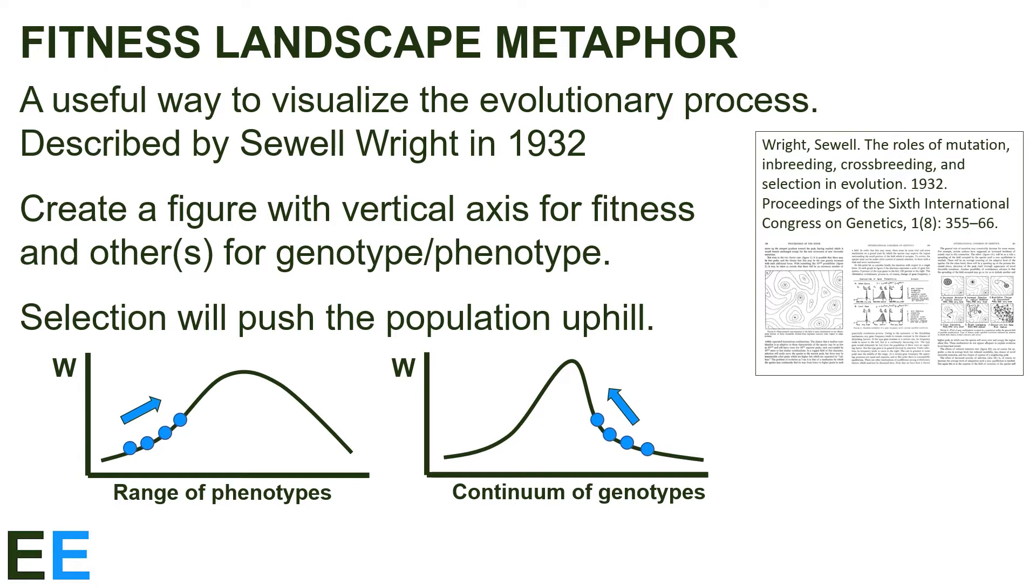The diagrams here show simple two-dimensional landscapes, one using a range of values for a phenotype as the horizontal axis, and another using a continuum of genotypes. The vertical axis is fitness, represented here by the usual symbol for fitness, W, in honor of Sewell Wright.